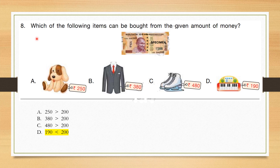Question number 8: Which of the following items can be bought from the given amount of money? The given amount is Rs. 200. Option A costs Rs. 250 — more than 200, cannot buy. Option B costs 380 — greater than 200, cannot buy. Option C is 480 — more than 200, cannot buy. Option D is 190 — less than 200, so we can buy. Correct answer is option D.